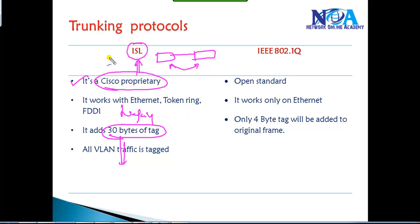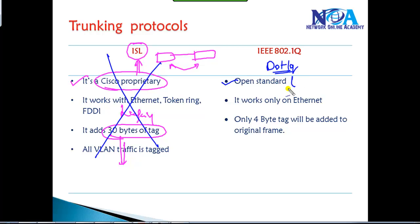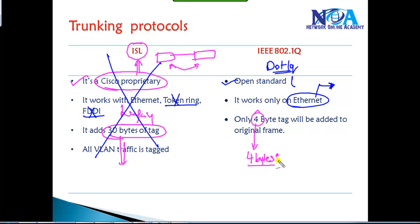ISL is no longer supported on most Cisco platforms, and even Cisco now uses dot1Q as the default trunking protocol. Written as 802.1Q, it is a standard that works with Cisco as well as non-Cisco devices. It supports only Ethernet networks — Token Ring and FDDI are no longer used. The major advantage of dot1Q is that it is a standard and adds only four bytes of tag information, resulting in less overhead on the switches.